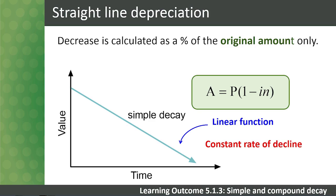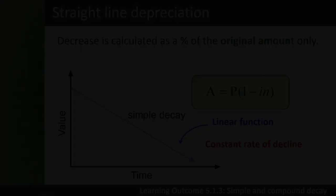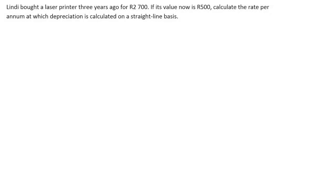Let's have a look at a problem with simple decay. Lindy bought a laser printer three years ago for R2700. If its value is now R500, calculate the rate per annum at which depreciation is calculated on a straight line basis. We use the Straight Line Depreciation formula in the form of the following equation to calculate the total depreciation on an item.